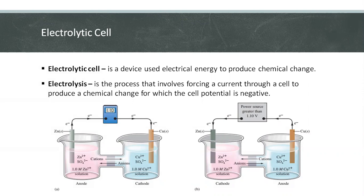This process is called electrolysis. It involves forcing a current through a cell to produce a chemical change for which the cell potential is negative.